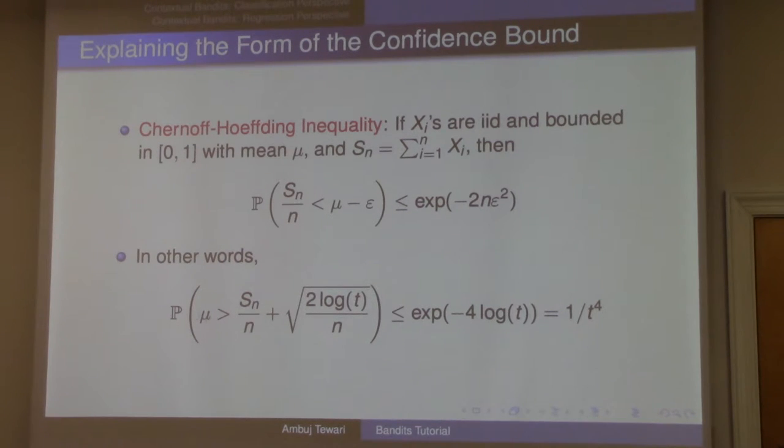And this is a control on that bad event. So if you form your upper confidence bound this way, with high probability it is a genuine upper confidence bound. That's the point.